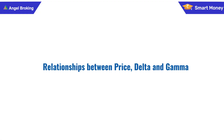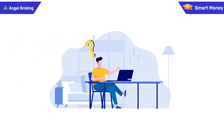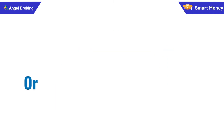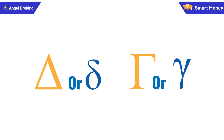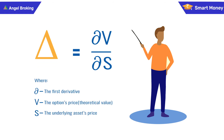The relationships between price, delta, and gamma have been analyzed over the years through many methods of options pricing. It is a complex process to value options, so today let's understand delta and gamma — the first option Greek.